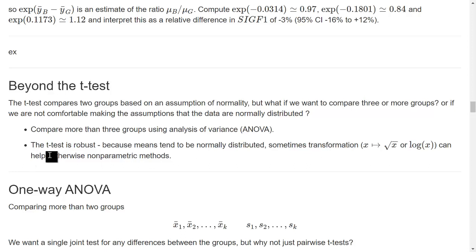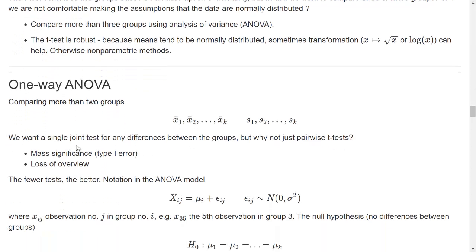If we don't want to make a transformation and then assume normality about transformed data, we'll use nonparametric methods. But next up is analysis of variance.